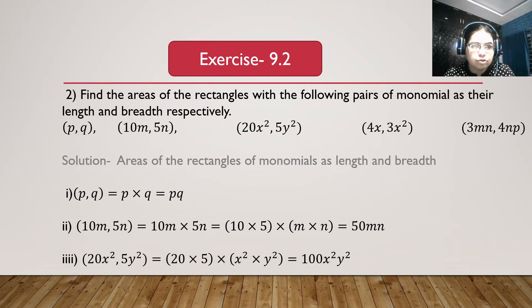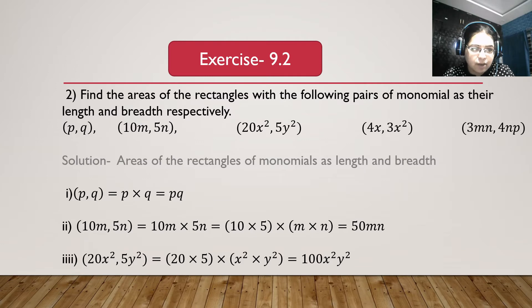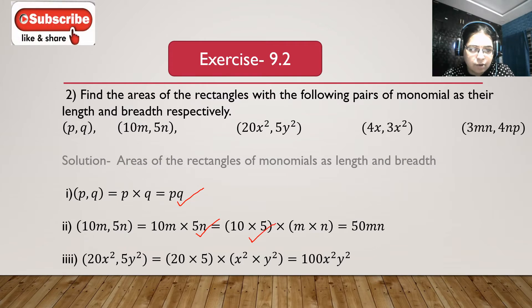Now question number 2: find the areas of the rectangles with the following pairs of monomials as their length and breadth. First bit: p and q — area is p multiplied with q, that is pq. Second bit: 10m and 5n. 10m multiplied with 5n equals 10 multiplied with 5 is 50, so we get 50mn.